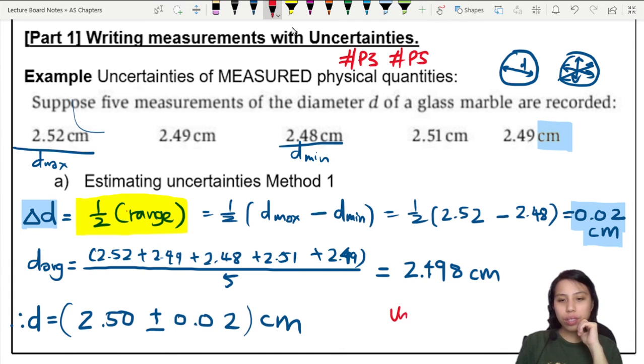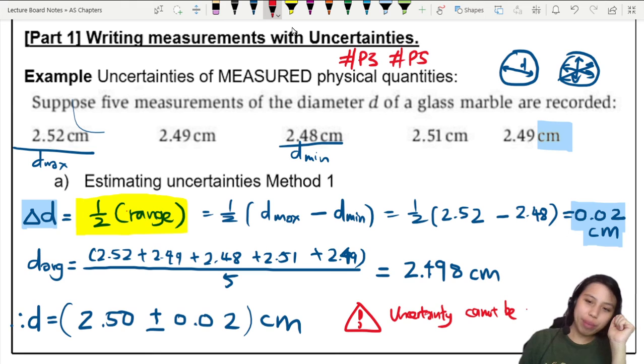If you get zero uncertainty, you cannot use this method. So uncertainty, this is a note warning sign. Uncertainty, whatever you use in this method cannot be, can I move over this a bit? Zero. So the whatever uncertainty you find with half the range cannot be zero. If it is zero, you cannot use this method.